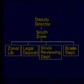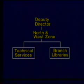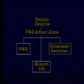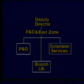Under the south zone, there is one zonal library, the legal deposit centers, the stock reviewing department and the braille department. North and west zones are under another director who looks after the technical services and two branch libraries. The central zone deputy director, who is housed in the main library, has the responsibility of supervising the social education department, lending and reference and the children's wing. The fourth director looks after the eastern zone and also the planning and development activities of the library. The whole extension services like hospital libraries, sports libraries, prison libraries and mobile vans are under the eastern zone deputy director.